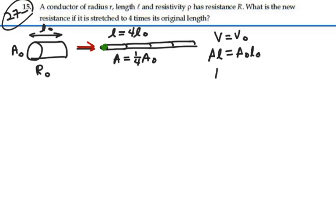So the new area will equal the old area times the original length divided by the new length. The new length is four L-naught. So this is the old area, A-naught, L-naught, four L-naught.